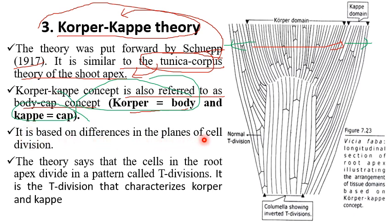It is based on differences in the planes of cell division. This theory says that the cells in the root apex divide in a pattern called T-division. In the corpus domain (the body), the T will be inverted. In the outer layer, the calyptra, the T will be upright. This is one distinguishing feature between the corpus and the calyptra domain.